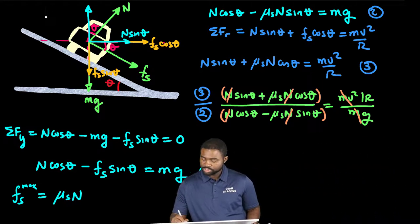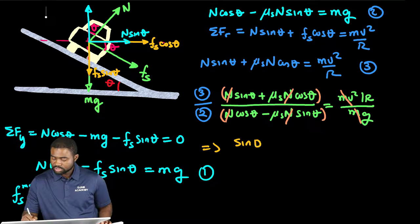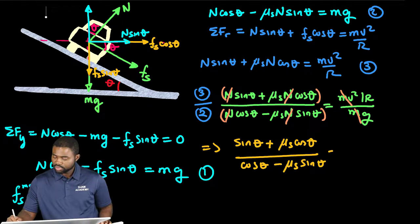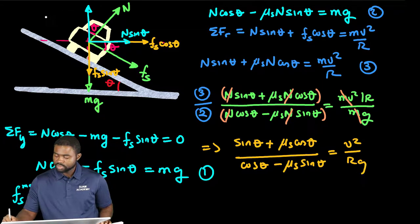Sine theta plus mu_s cosine theta divided by cosine theta minus mu_s sine theta. This will be equal to v squared divided by Rg.